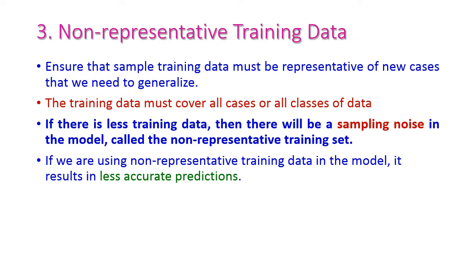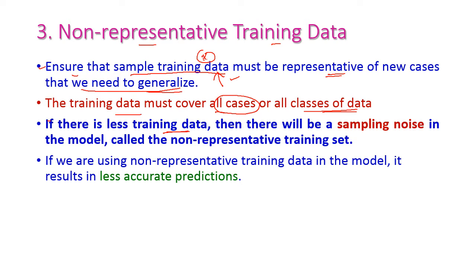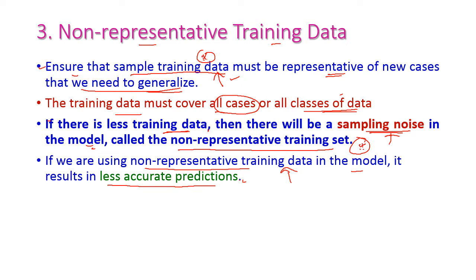The third issue is non-representative training data. While training an algorithm, we need to ensure that the sample training data is representative of new cases that we need to generalize. The training data must cover all cases or all classes of data. If there is less training data which does not cover all classes, there will be sampling noise in the model. This is called a non-representative training set. If we use a non-representative training set to train a model, it results in less accurate predictions.